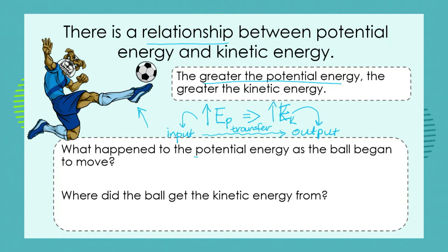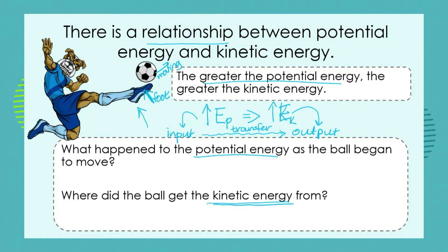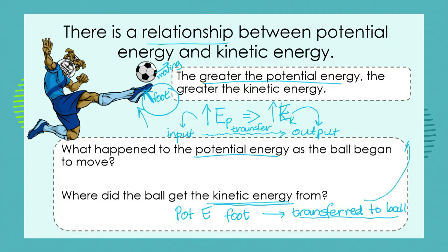So what happened to the potential energy as the ball began to move? The potential energy was delivered by the foot and the ball started moving. When it was moving it had kinetic energy — where did it get that kinetic energy from? It got its kinetic energy from the potential energy that was in the foot. That energy of the foot is transferred to the ball and the ball then displays kinetic energy as it moves up into the air.